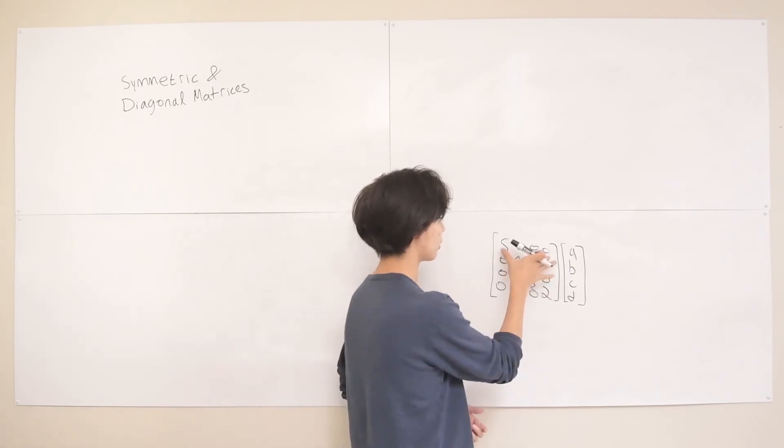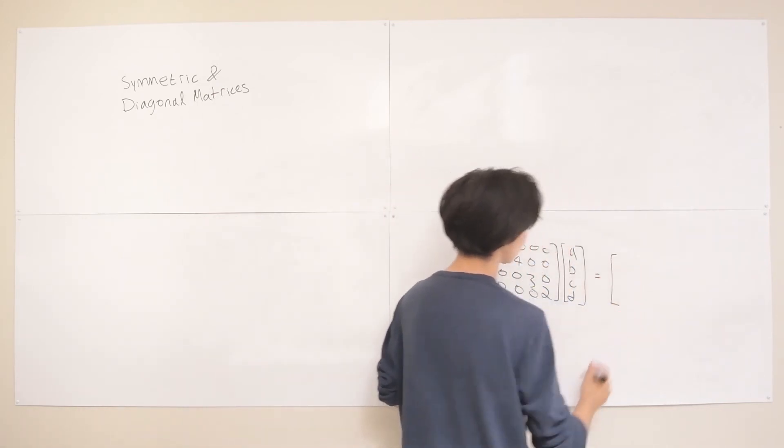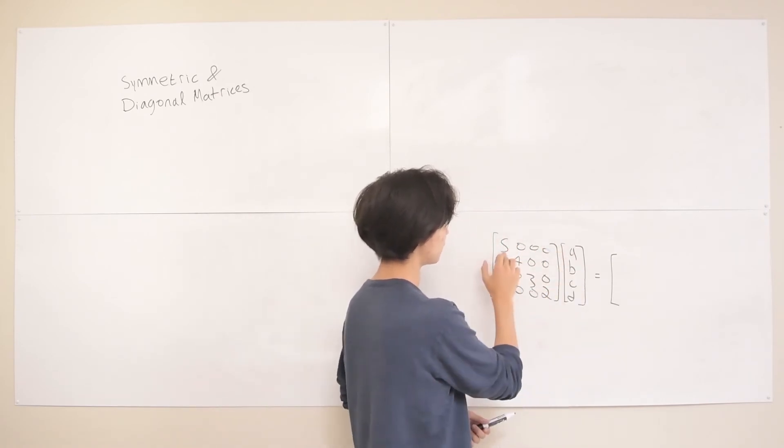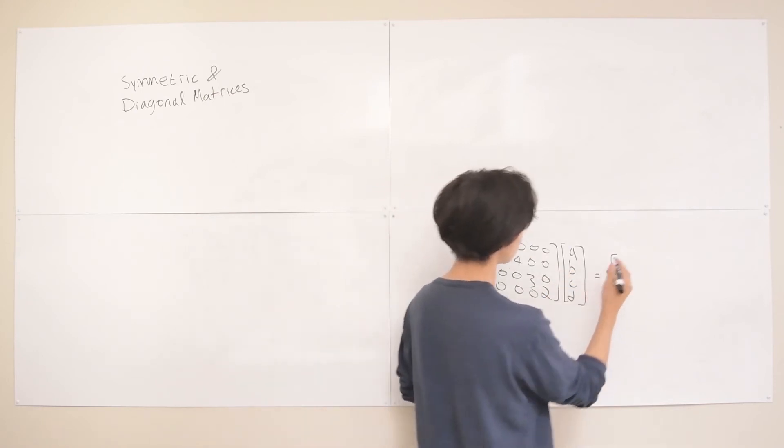And you remember how we multiply matrices and vectors, hopefully. So we're just going to do dot product between the rows and the columns. So our resulting thing is going to be another vector. So let's do with this with this. So we can see that 5 multiplies the A, and then the 0s multiply with everything else and cancel everything out. So we just get 5A here.